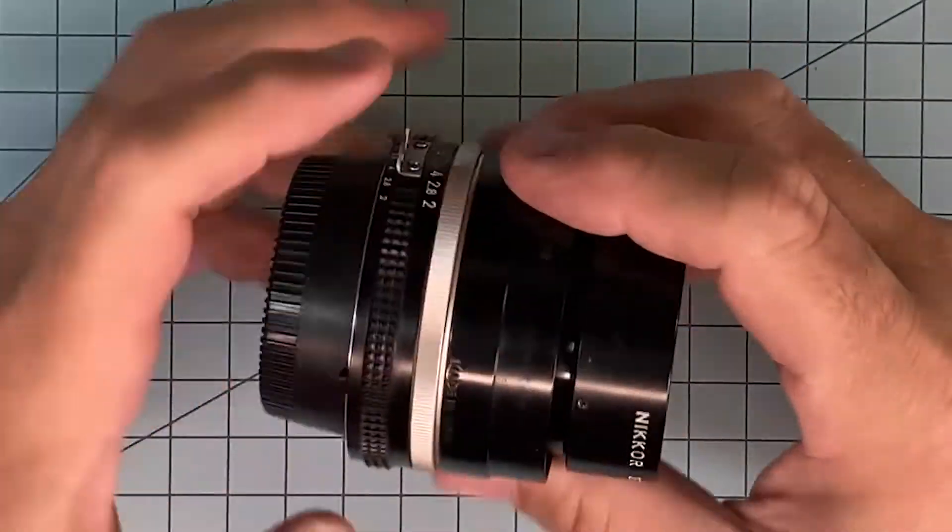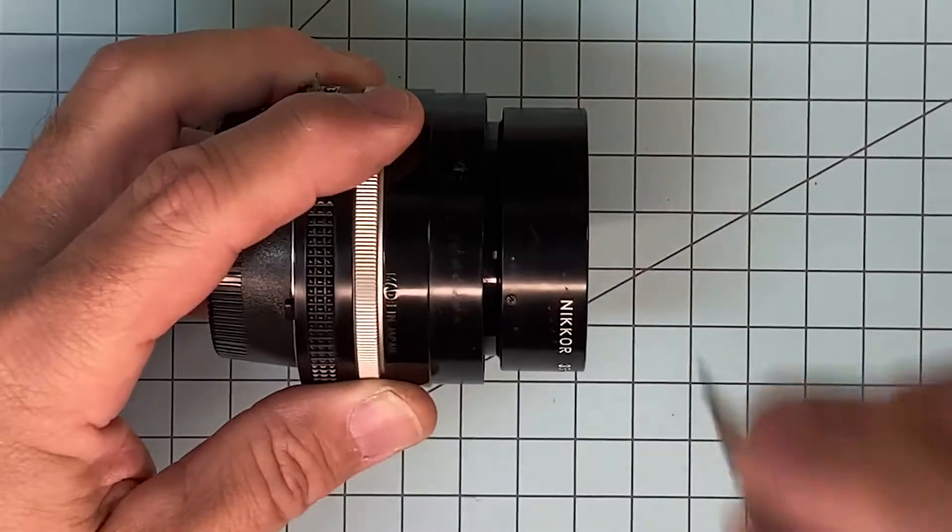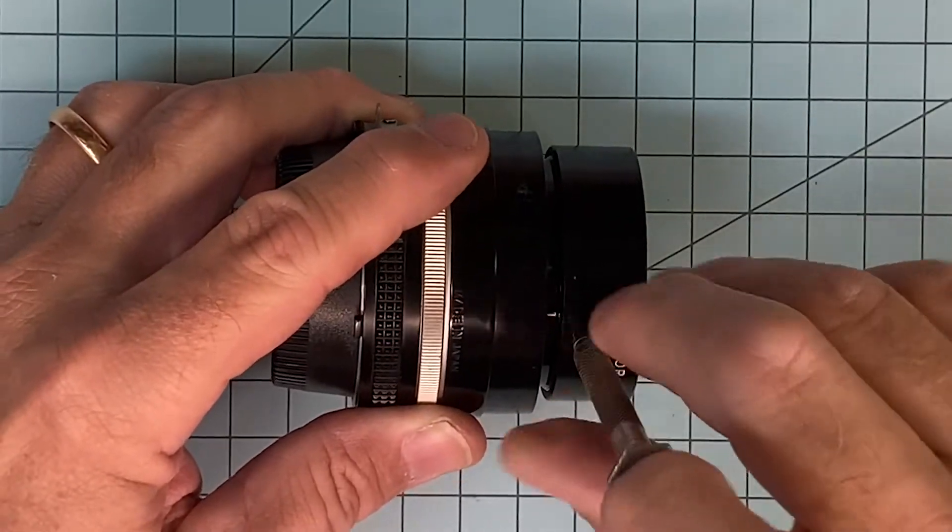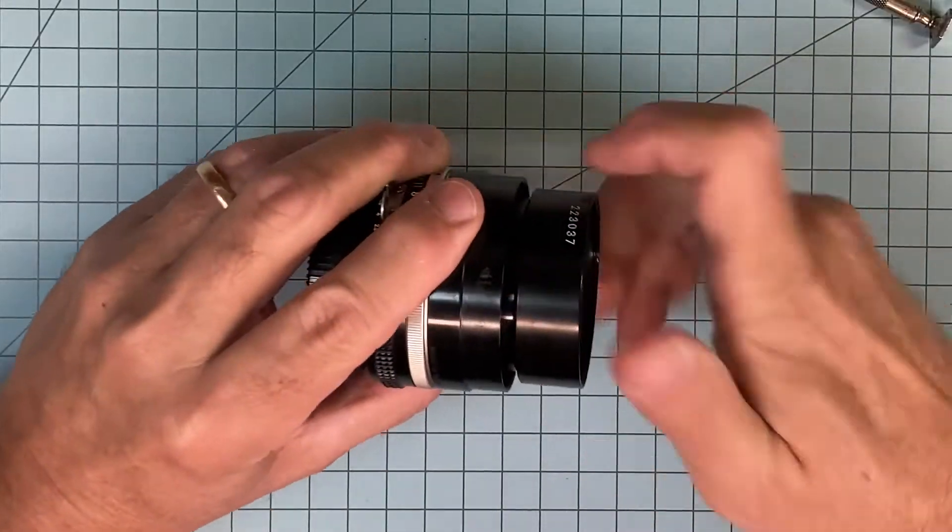Next step, you want to look for a set screw. These front rings always have a set screw somewhere. The set screw has to come out, so don't try and take this out without taking a set screw out, and this comes out.